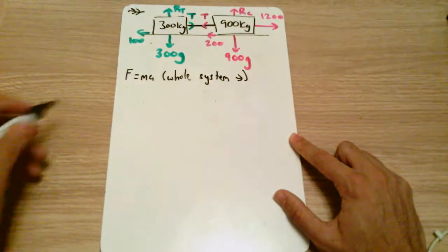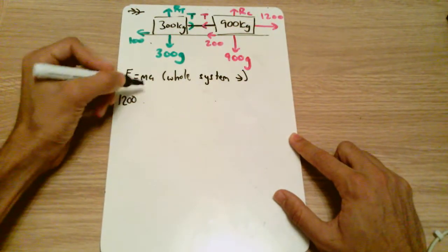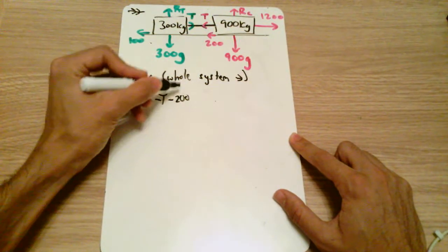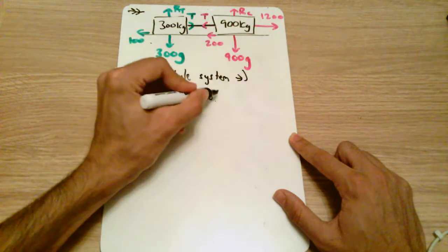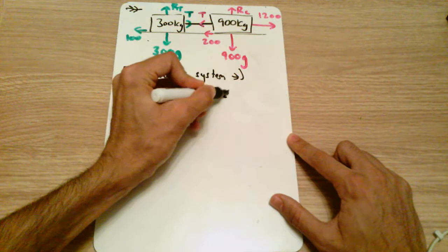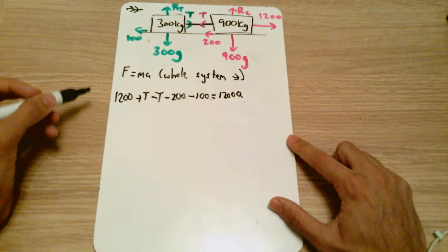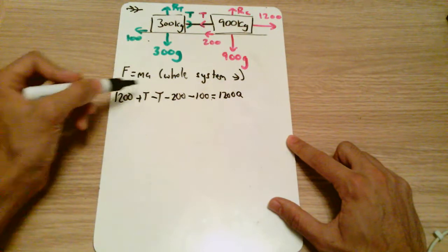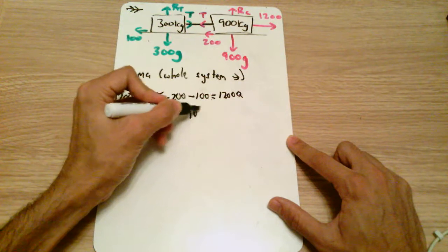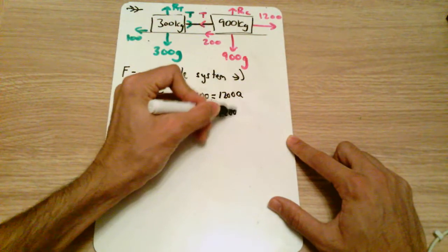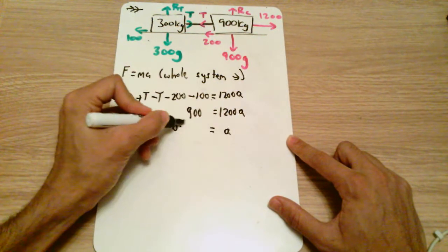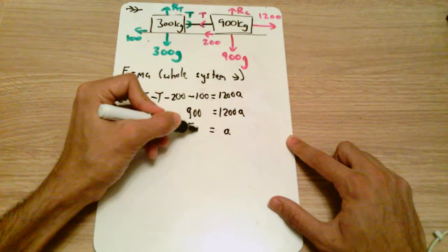If we look at this scenario, the net force to the right is our 1200 plus the tension and then minus the tension, these tensions are going to cancel out, minus the 200 minus the 100, and the collective mass of the system is 1200 times by a. If we work this out, 1200 minus 200 is 1000 minus 100 is 900. 900 equals 1200a so a equals 0.75 meters per second squared.